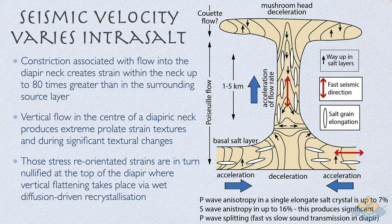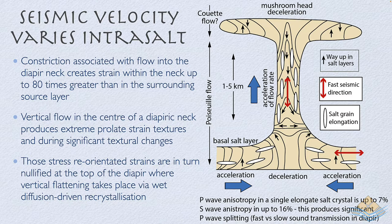As salt is constricted flowing up into the neck of a diapir, the stress field can create strain within the salt neck up to 80 times more than in the surrounding source layer. This vertical flow and stress in the diapyric neck produces recrystallization textures, creating variations in velocity within the salt mass. Once the flowing mass reattains a near-surface position, it undergoes another set of stress-related recrystallizations in the wet salt environment, where pressure solution textures recrystallize the salt, producing separate velocity profiles in salt allochthons through which seismic waves must penetrate to image sub-salt geometries.